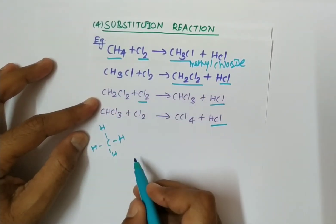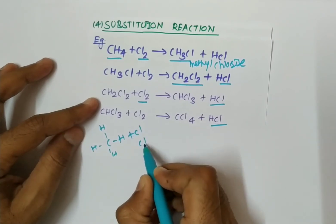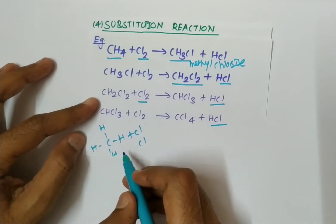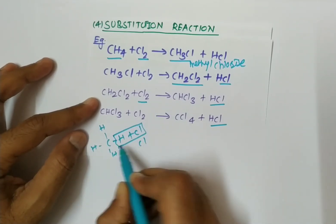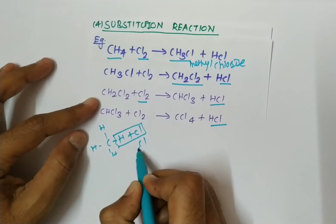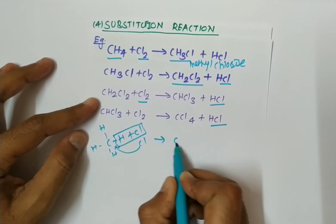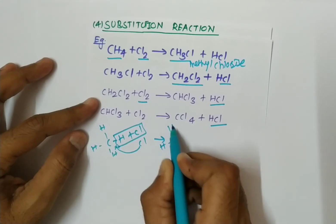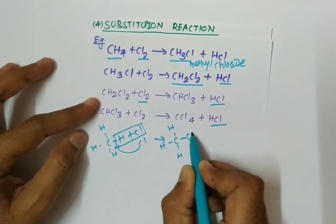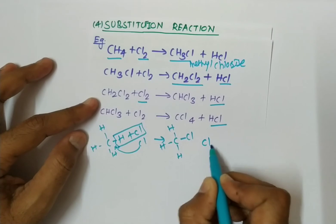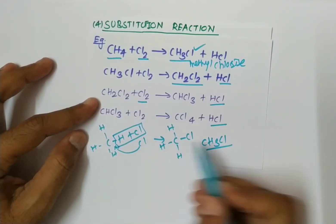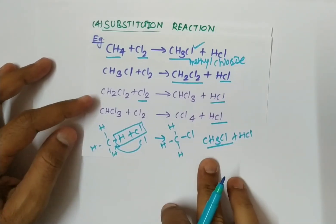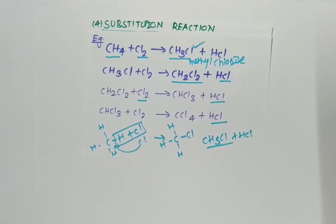In the first reaction, methane reacts with Cl2. One hydrogen is removed from methane and chlorine is substituted in its place. So CH3Cl plus HCl is formed. The same reaction continues for all subsequent cases. This is all about the chemical reactions of carbon and its compounds. Thank you, my dear students.